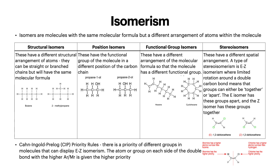Isomerism is a big topic for this side of chemistry. Isomers are molecules with the same molecular formula but a different arrangement of atoms within the molecule. We have different types of isomers. Structural isomers have a different structural arrangement of atoms — they can be straight or branched chains but will have the same molecular formula.